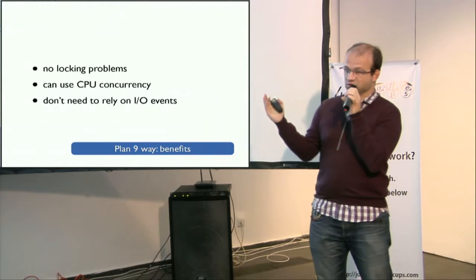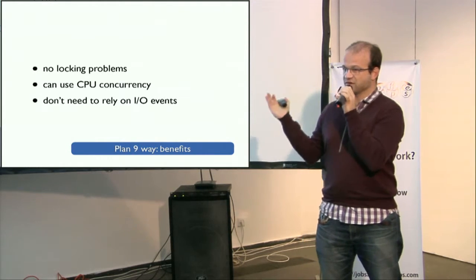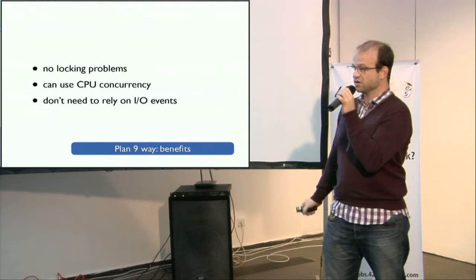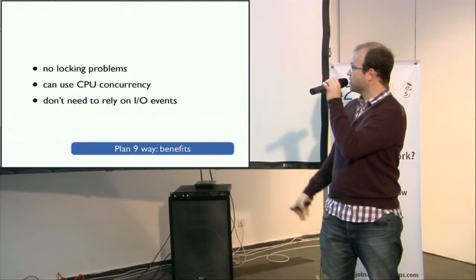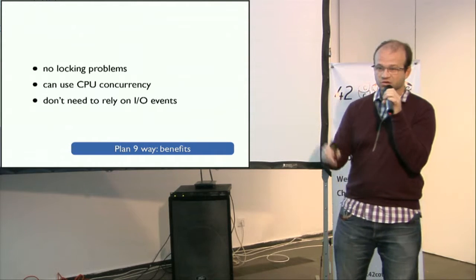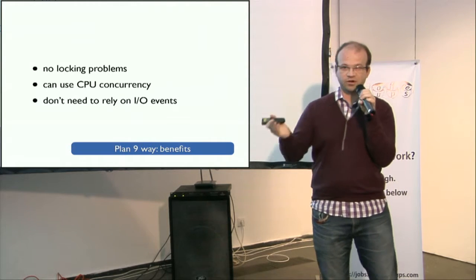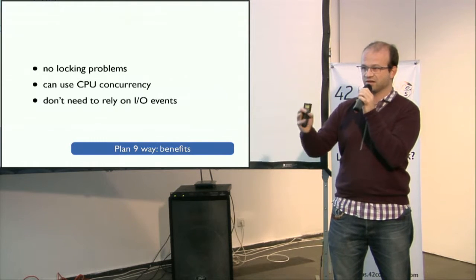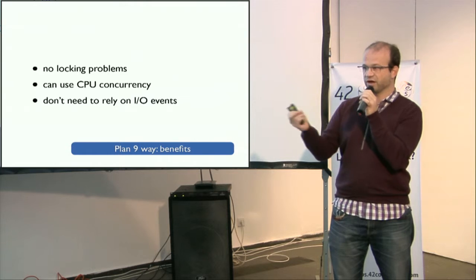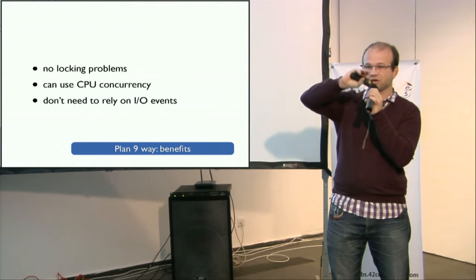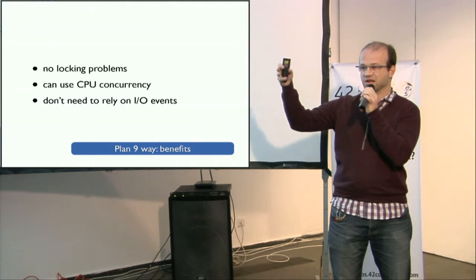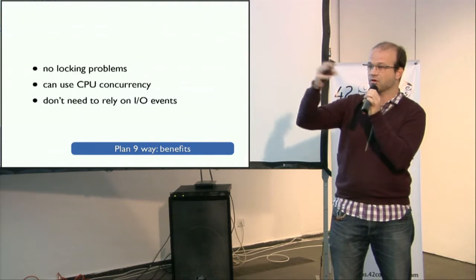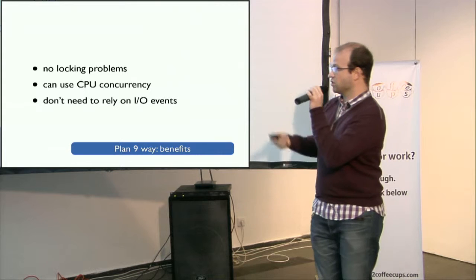In Plan 9 you don't have any locking problems, you can use any core you want, any machine you want, and make any parallelization you want. You don't rely on IO. All the event loops around — Twisted, LibUV, etc. — are based primarily on IO events. And then you can have asynchronous event callbacks, but this is before or after IO events, or when there is none.